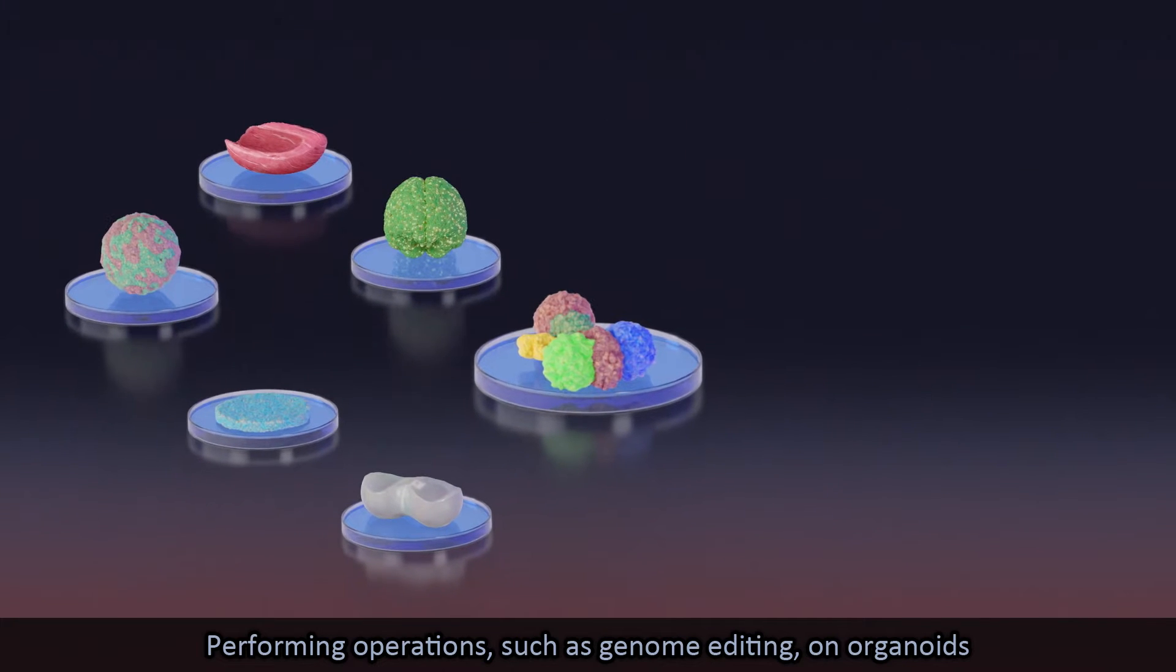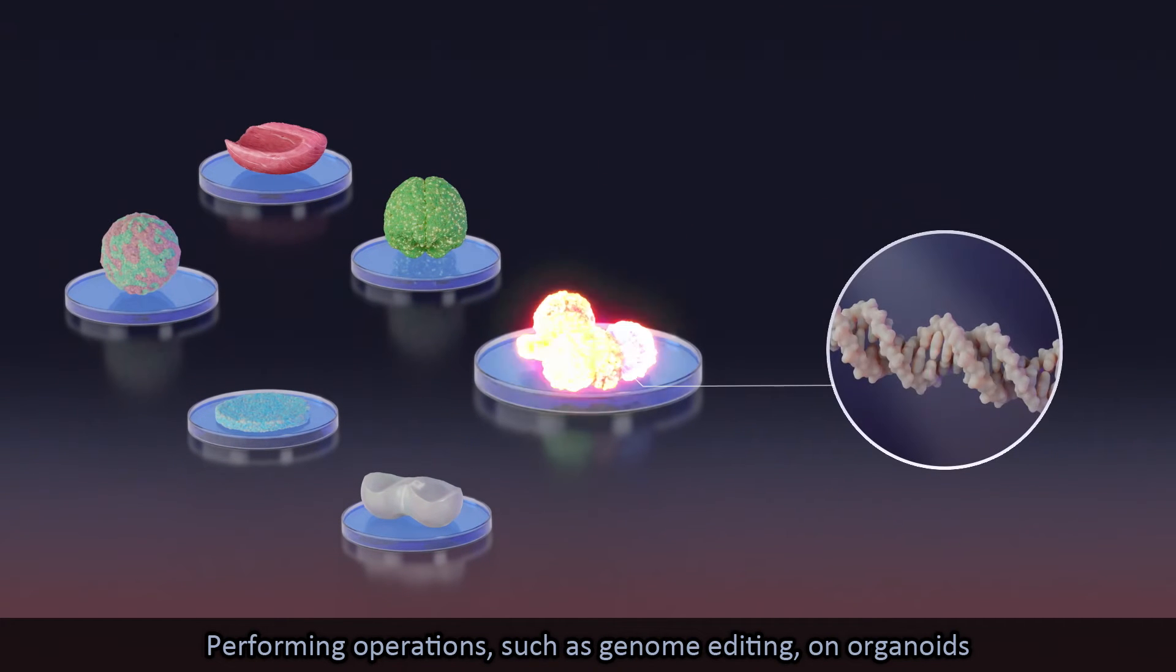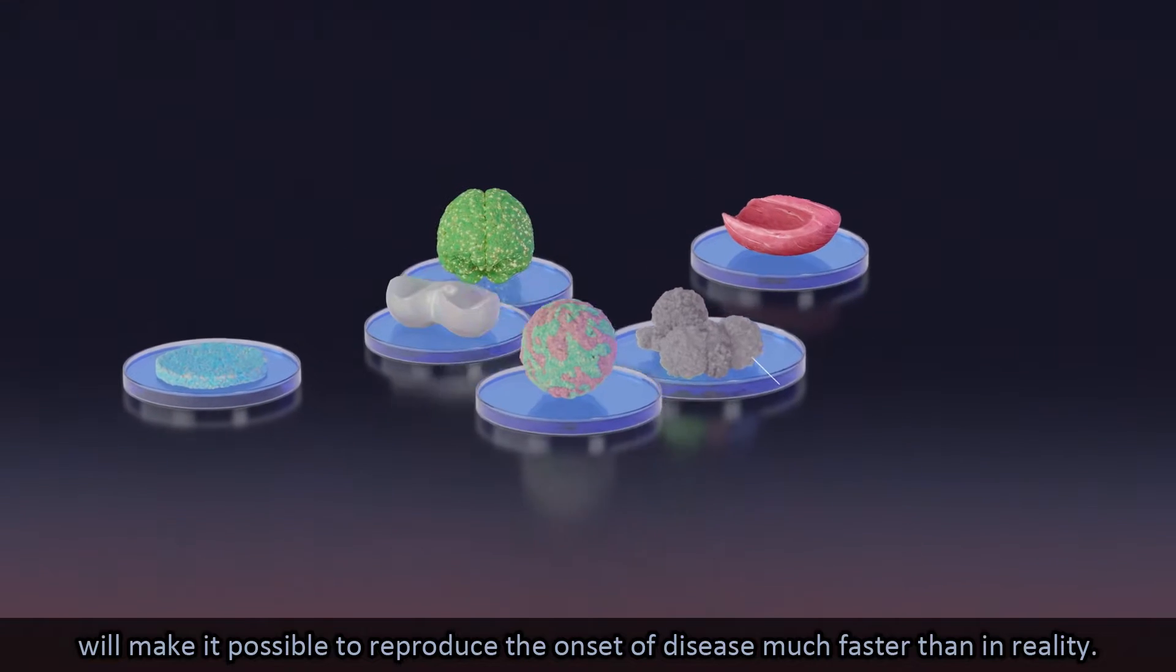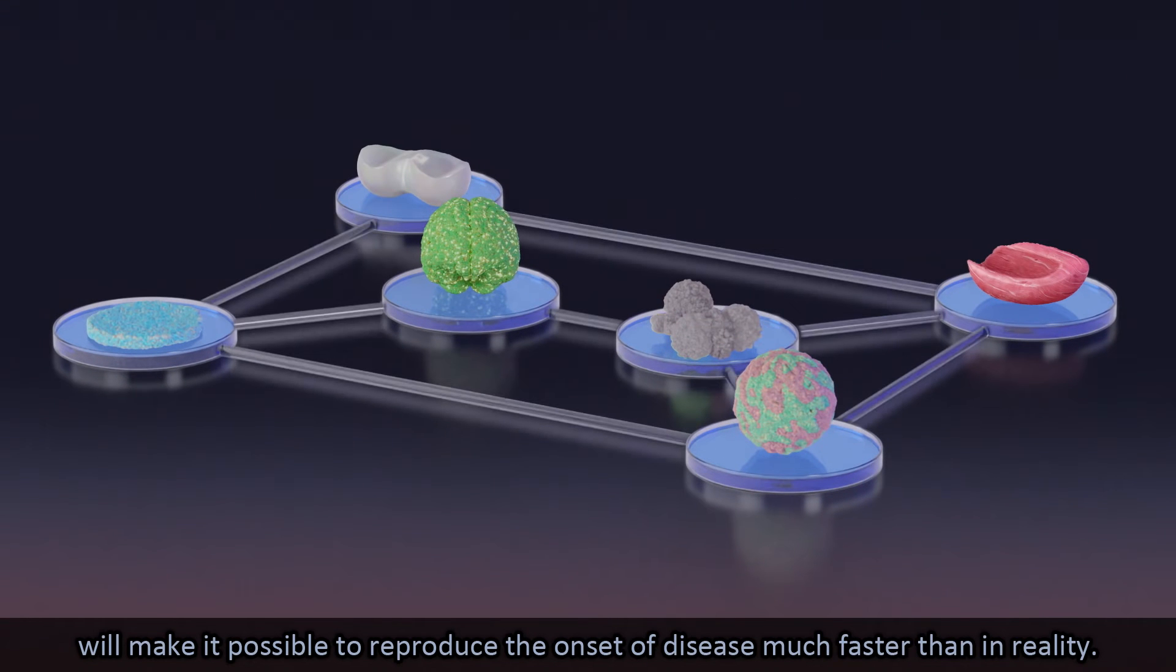Performing operations such as genome editing on organoids will make it possible to reproduce the onset of disease much faster than in reality.